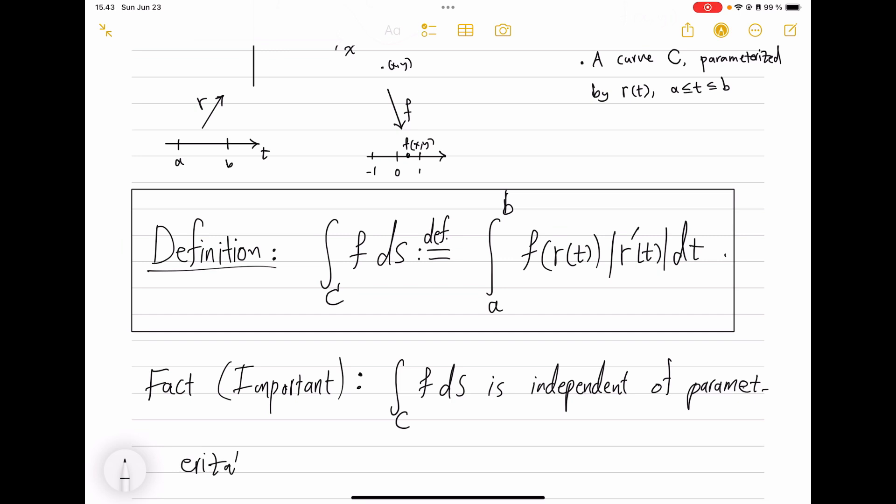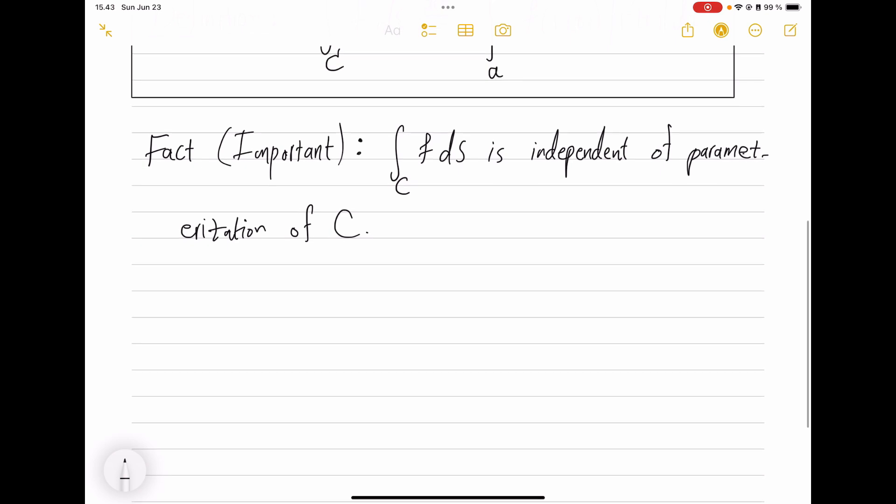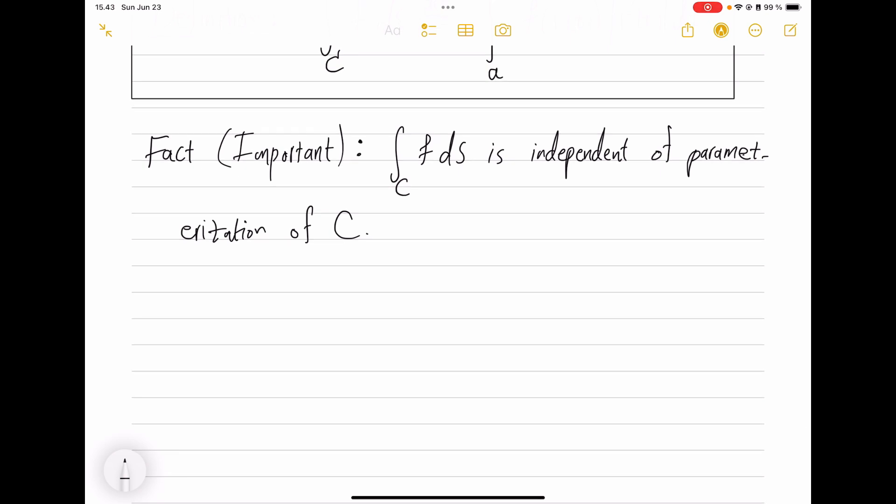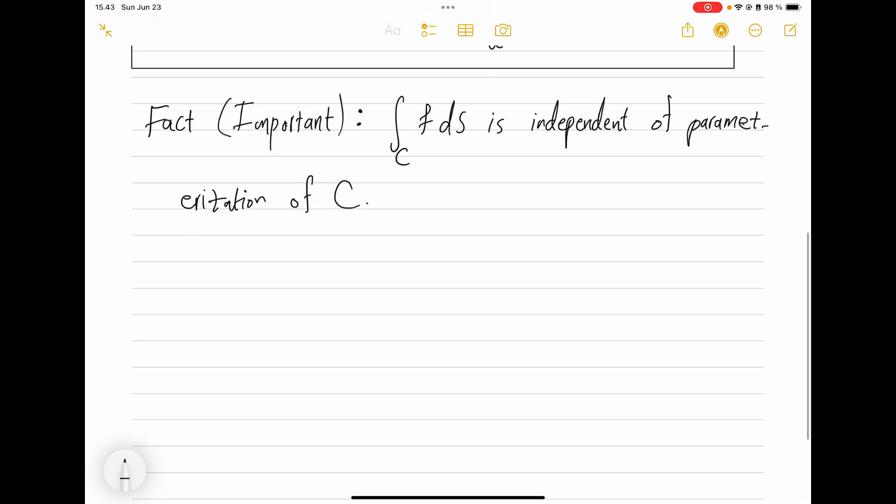Very important fact, partially due to this inclusion of |r'(t)|dt, is that the integral over the curve ∫f ds is independent of parameterization of the curve C. We saw before that there is one particular parameterization that is really important.